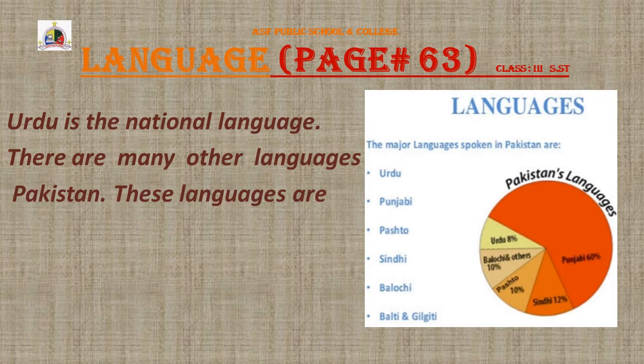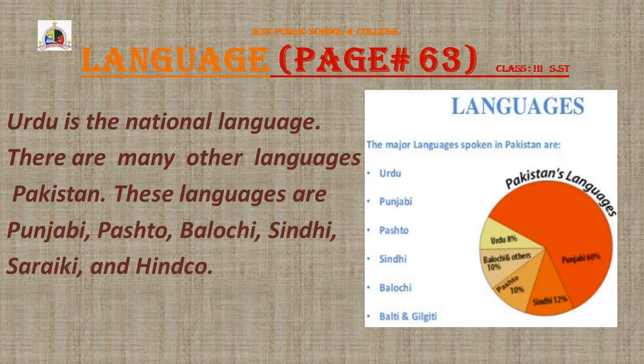Language, page number 63: Urdu is the national language. There are many other languages commonly spoken in Pakistan. These languages are Punjabi, Pashto, Balochi, Sindhi, Saraiki and Hindku. Urdu is a way to understand and connect across Punjabi, KPK, Sindhi, Balochi and other regional languages. Urdu is a way to understand the importance of this language.